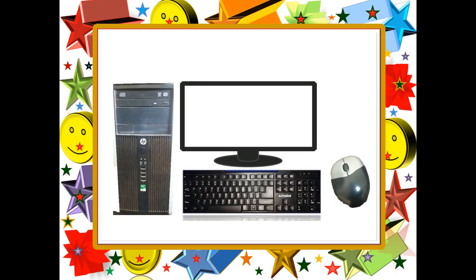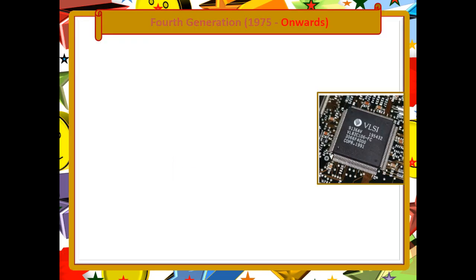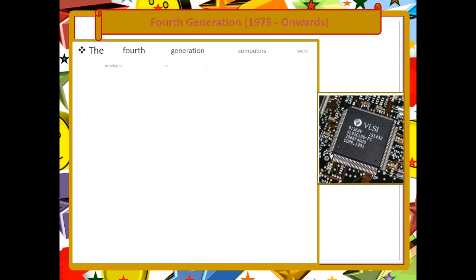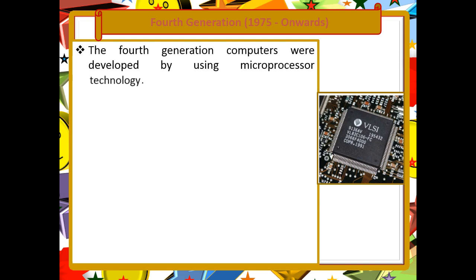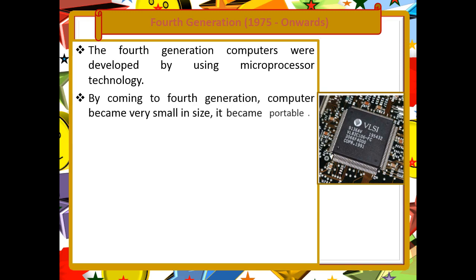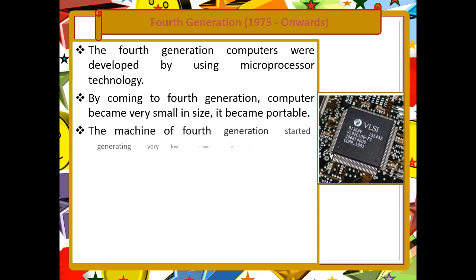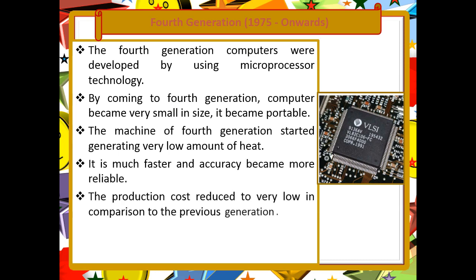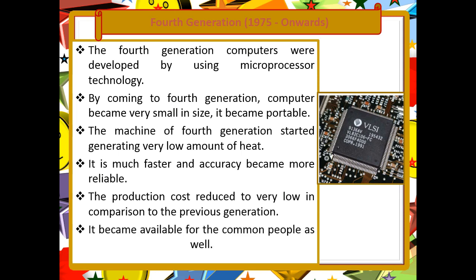The fourth generation computers started from 1975 onwards, and we are still using fourth generation computers today. They were developed using microprocessor technology. By the fourth generation, the computer size became very small — our laptops and personal computers are all fourth generation computers. They are also much faster and more accurate compared to the previous generation.